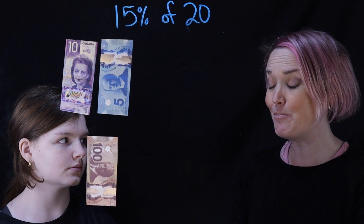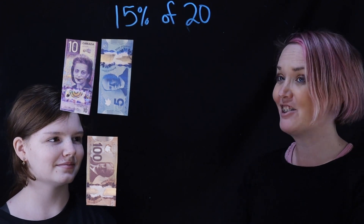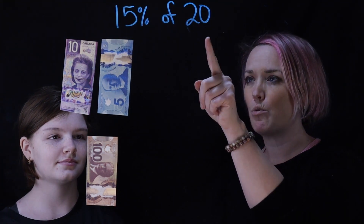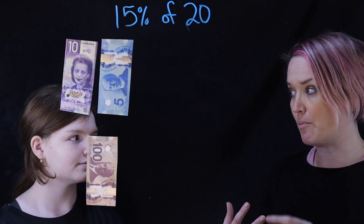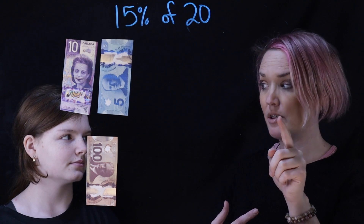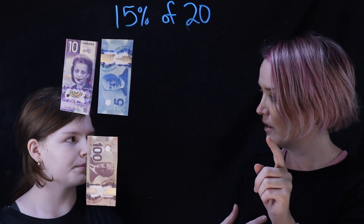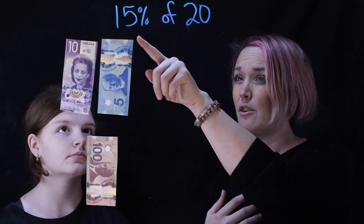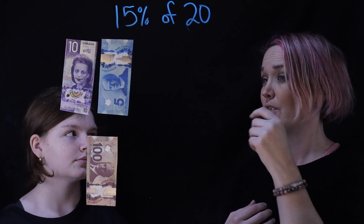Hi everyone. I have the amazing Lauren with me today and she's going to tell us how she figures out 15% of 20. Now Lauren, we've talked about this before, but percent means per and then cent. What does cent mean? It means a hundred. So it's 15 per hundred — if it's 15%, then it's 15 for a hundred.